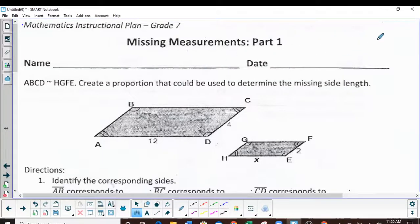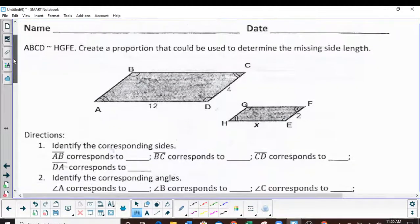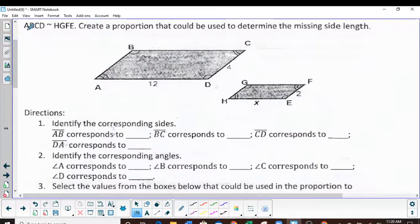Okay, this is FLP page 15. We've got parallelogram ABCD which is similar to HGFE. Create a proportion that could be used to determine the missing side length. Here's what I do first: let's get these letters written vertically and line everything up.